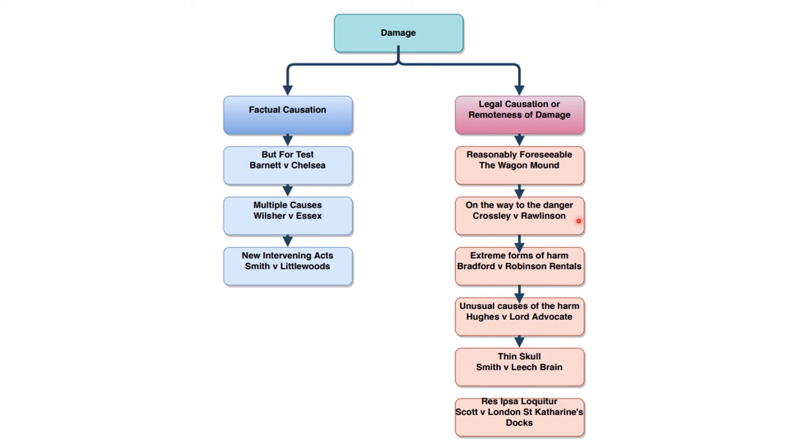Crossley v Rawlinson was where our claimant was injured on the way to the danger. He was running with a fire extinguisher and was injured on his way there, and that was not reasonably foreseeable. Bradford v Robinson Rentals helps to make that last point that I mentioned, that if it's a foreseeable type of damage, the defendant's liable for the full extent of the damage, even though the extent of the damage was not foreseeable. In Bradford v Robinson Rentals, he got frostbite when he was driving in a lorry in winter that didn't have heaters. Because it was an injury that was of the type that's reasonably foreseeable, i.e. from being cold, the fact that it was a very extreme injury caused by being cold was irrelevant. The defendant's liable for the full extent of it.